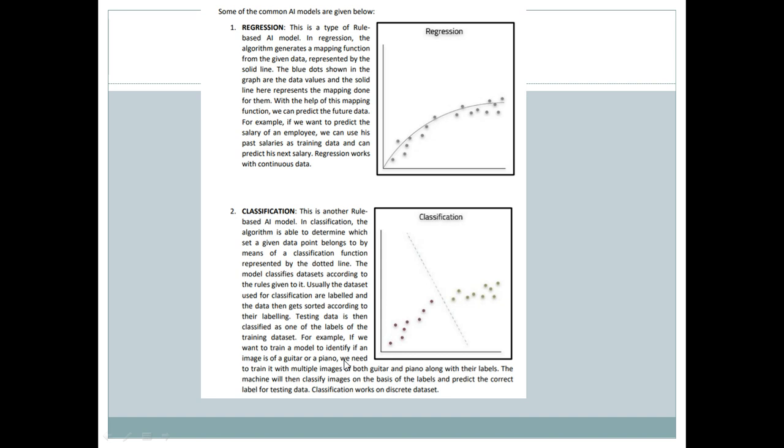For example, if you want to train the model to identify if an image is of a guitar or a piano, we need to train it with many images of guitar and piano along with their labels. Once the machine learns from lots of images, with any new incoming image, it will be able to predict whether it is a guitar or a piano. Classification works on discrete data sets. Discrete data sets are like categories.